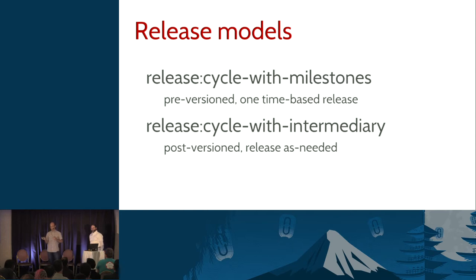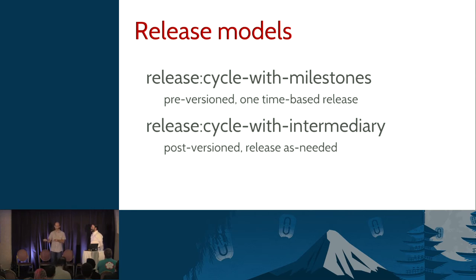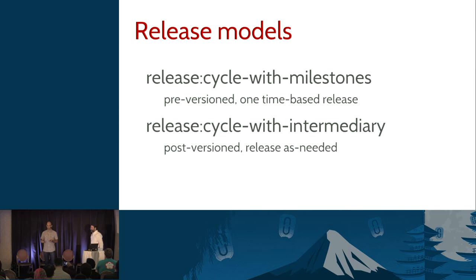We spent a lot of time during the Liberty cycle standardizing the release models supported by the release team. For Mitaka, a 'cycle with milestones' is the usual OpenStack model with one release per cycle - it's pre-versioning with one time-based release at the end of the cycle. It's great for projects that are young or so massive that they can't really test all the various combinations - because you produce developmental milestones along the way for users to test their specific use cases and verify nothing is broken.